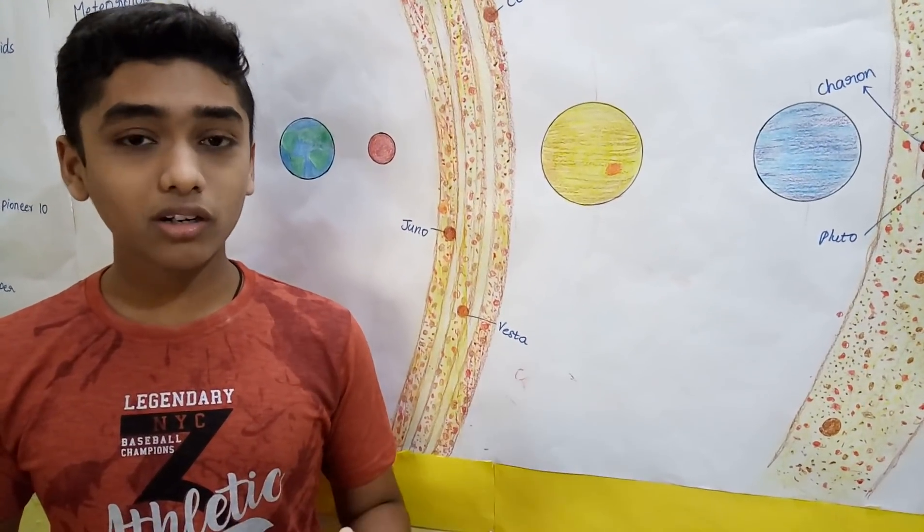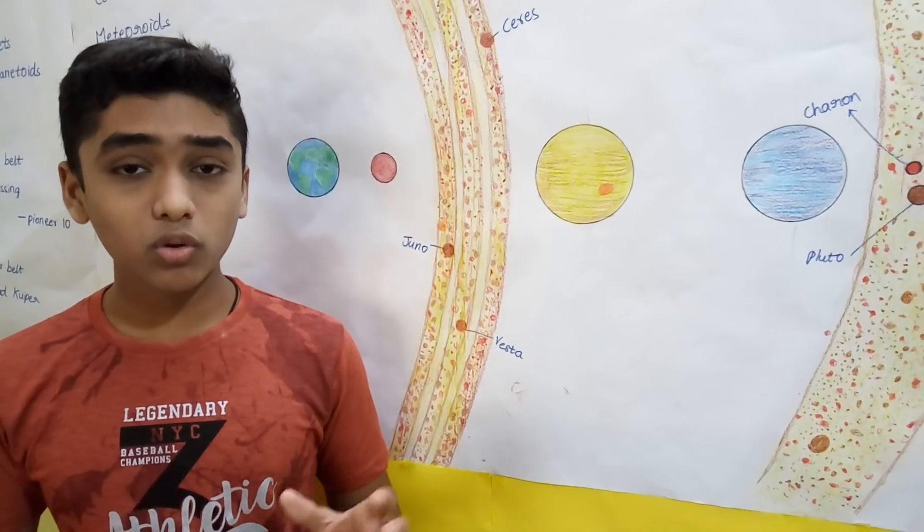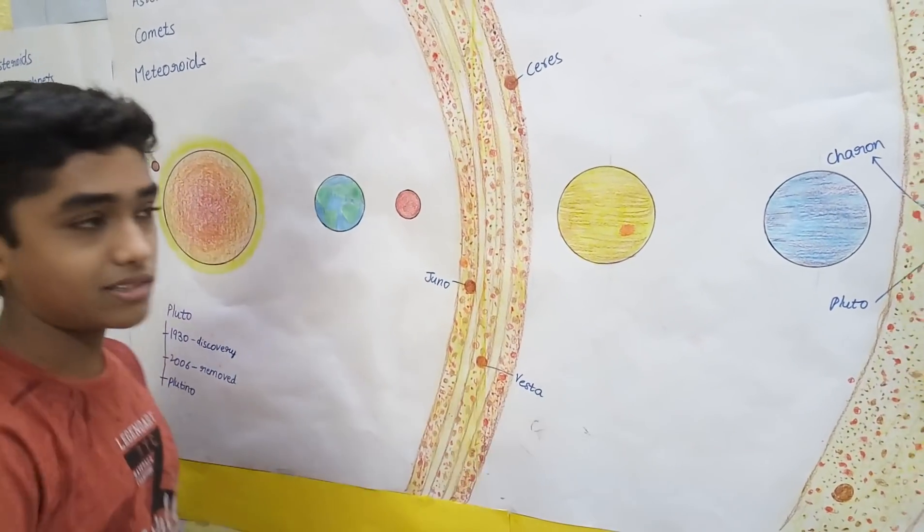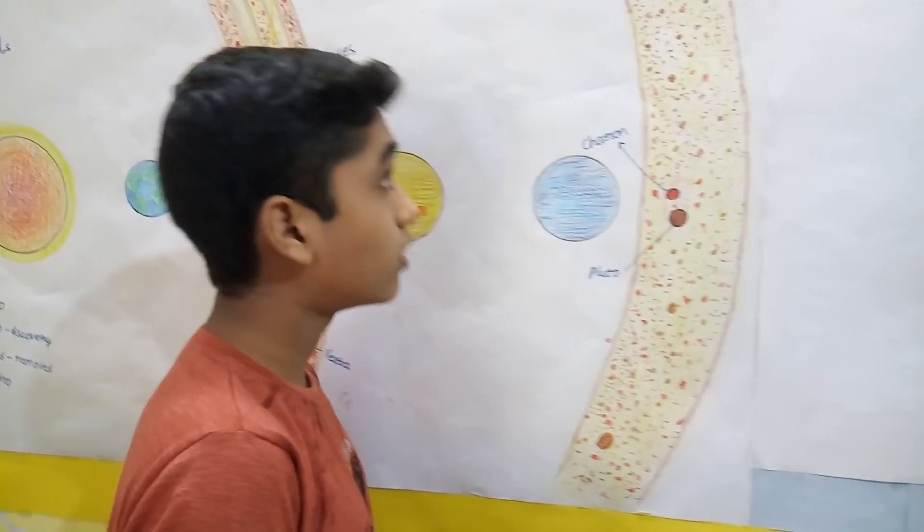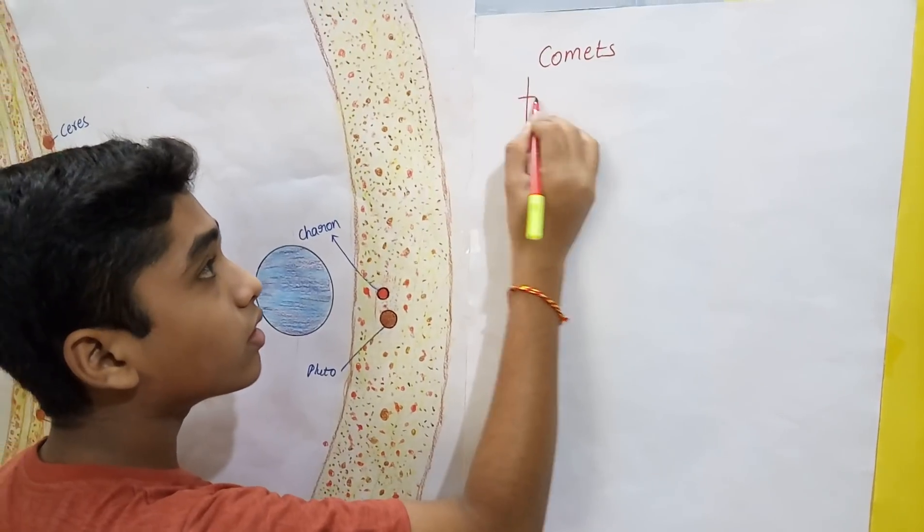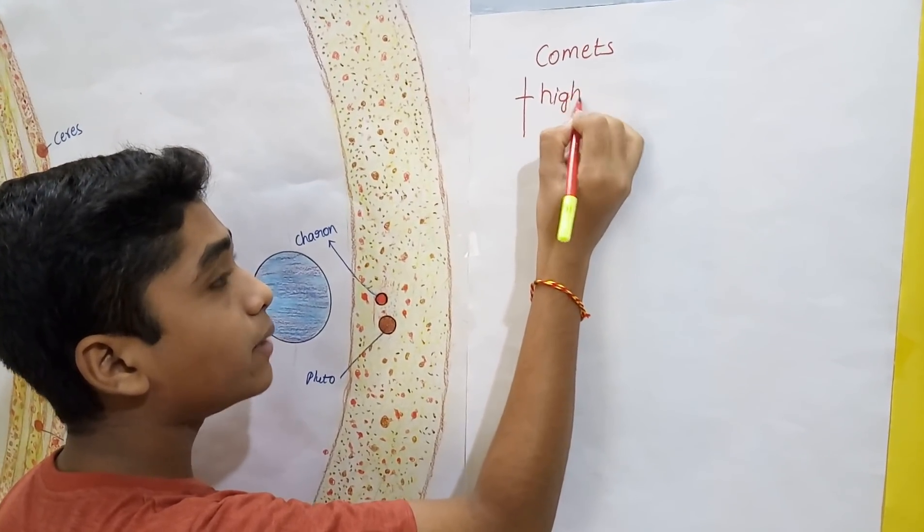Comets are not so different as asteroids. Those are the rocks that revolve the sun in highly elliptical orbits.